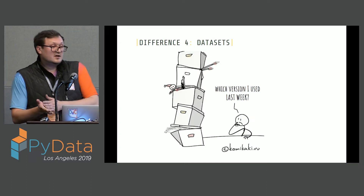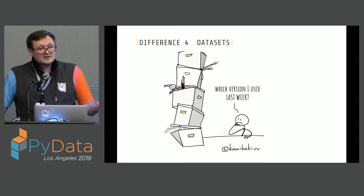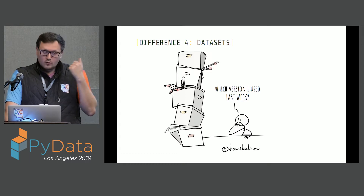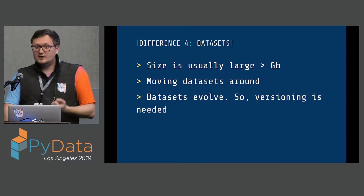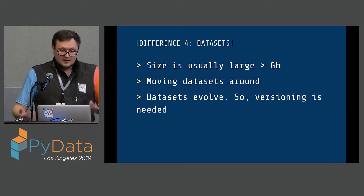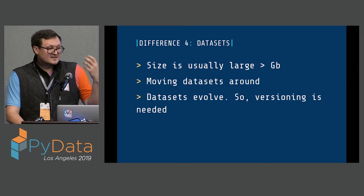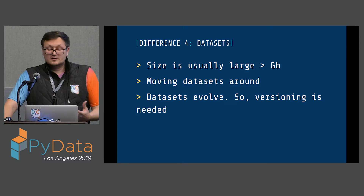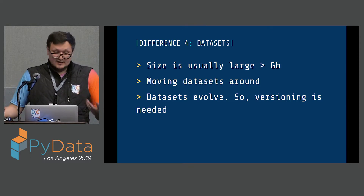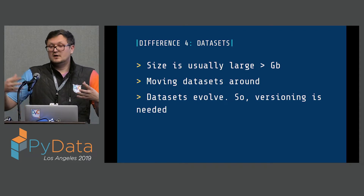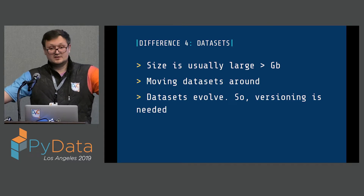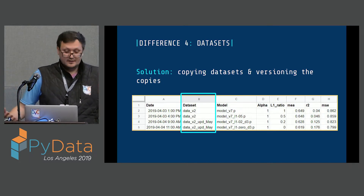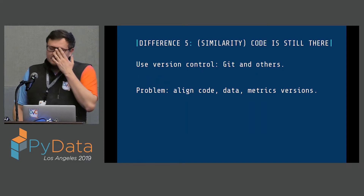The next difference is datasets. In ML projects, we deal with gigabytes of data — sometimes dozens or hundreds of gigabytes. It takes time to move these datasets around. What's even more complicated is that datasets evolve: you get new labels from a labeling team, data scientists fix mistakes in datasets, or you use techniques like active learning that change large volumes of images at the same time. It's still important to keep track of which datasets were used to produce a model.